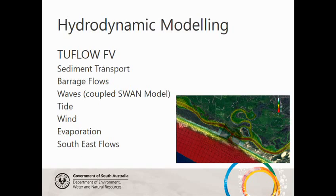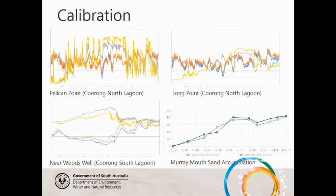On the back of that, we undertook 2D flow modelling to look at barrage operations and how water released from the barrages could best prevent sediment accumulation within the mouth and keep it open. The model has a sediment transport model and includes waves, a salinity model, tide, wind, evaporation, and southeast flows. The model was calibrated through 14 gauges in the Murray Mouth and Coorong using tide and salinity data, and bathymetry data was also used to calibrate the sediment accumulation.